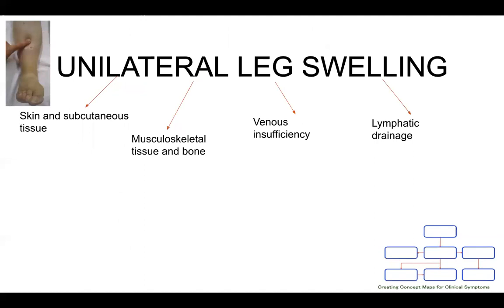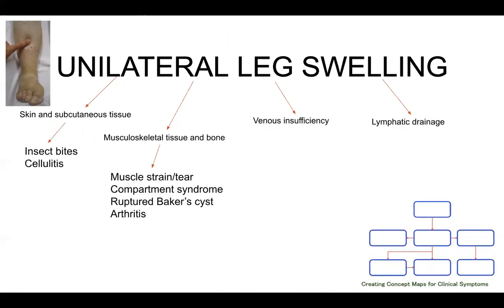Lower limb swelling might be unilateral or bilateral, so we'll start with unilateral leg swelling. Thinking about anatomy, lower limb swelling could be due to cellulitis from an infection through a break in the skin, or it could be due to a ruptured Baker's cyst, which can present with sudden onset — especially when walking up steps with an arthritic knee.